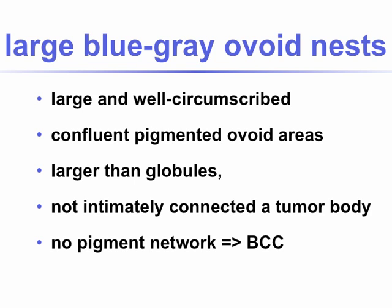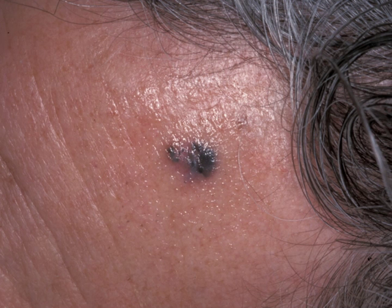Large blue-gray ovoid nests are large and well-circumscribed, confluent, pigmented ovoid areas. They're usually larger than globules, not intimately connected to the tumor body. And again, if there's no argument for a melanocytic lesion, this is very suggestive for a basal cell carcinoma.